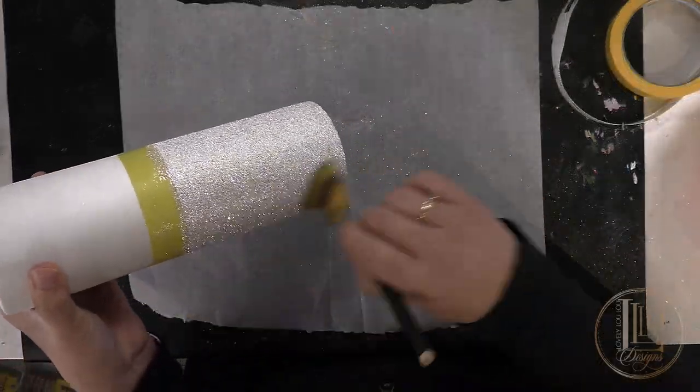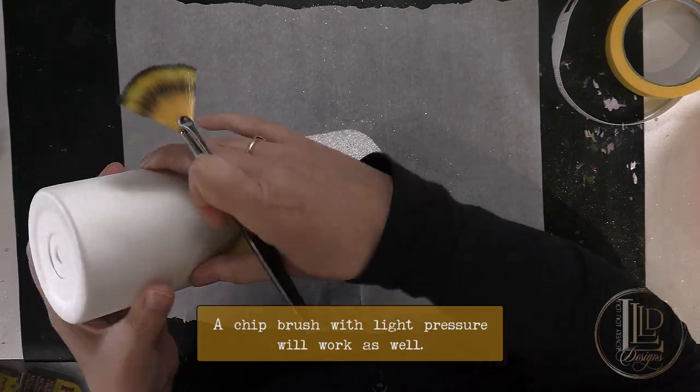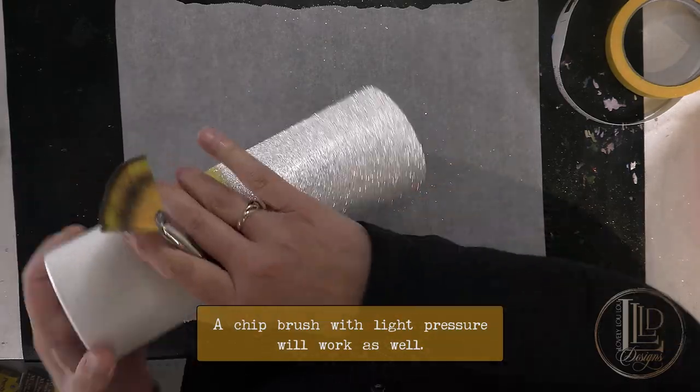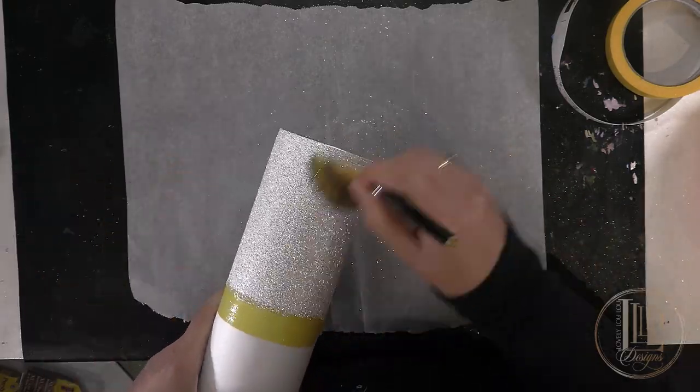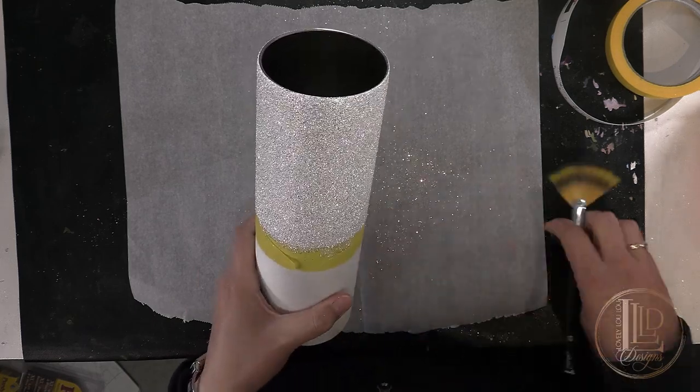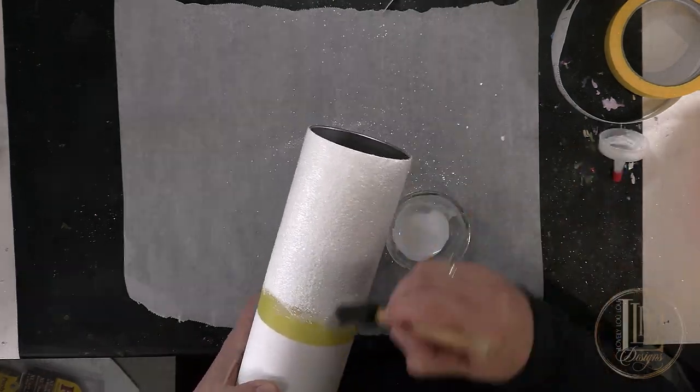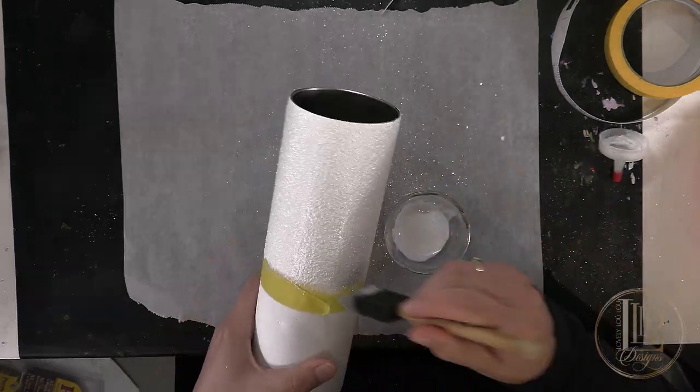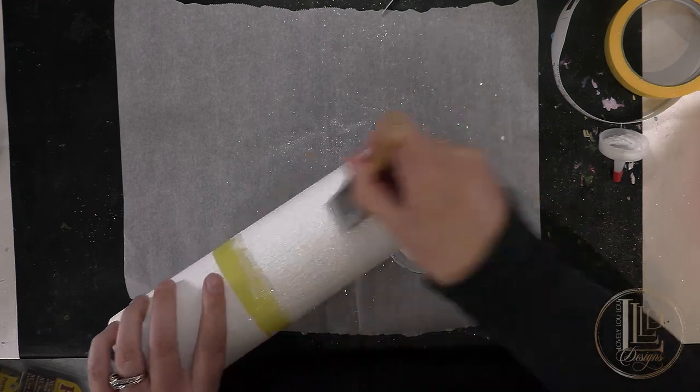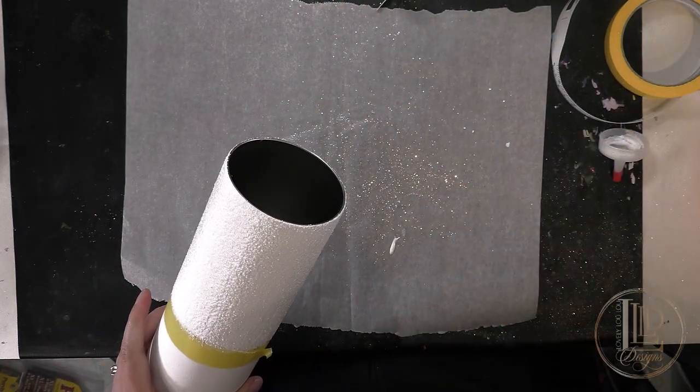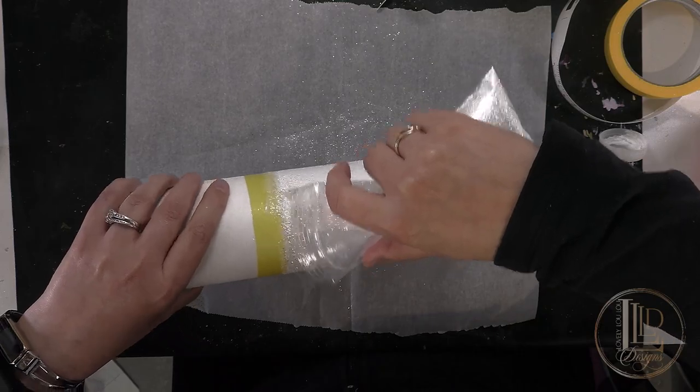After the Mod Podge is dried, I use a fan brush to brush off any loose glitter and I check for coverage. If I don't have full coverage, then I will need to add a second coat of glitter. In this case, I needed a second coat, so I began by applying Mod Podge directly over my existing glitter layer and then adding the fine cut, followed by the extra fine cut of the diamond dust glitter.